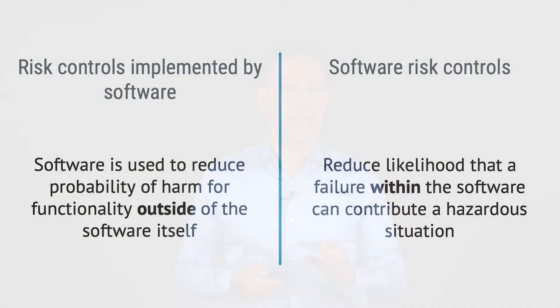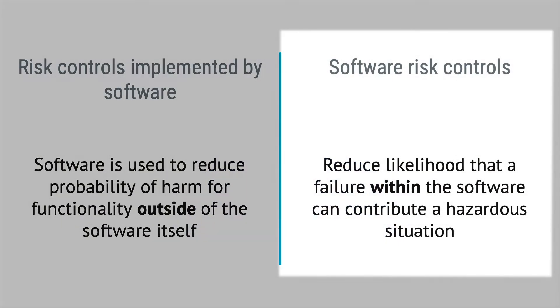And this is what confuses many. The software now implements a functionality which happens to be a risk control measure, but not a software risk control measure. So, what is then a software risk control measure? A software risk control measure is used to reduce the likelihood that a failure within the software can contribute to a hazardous situation.